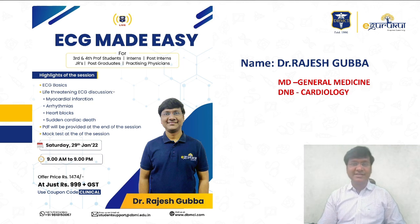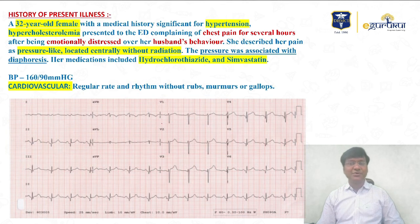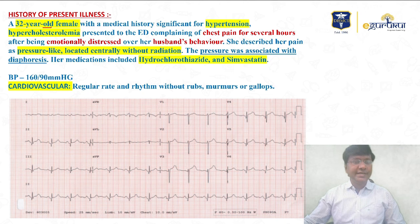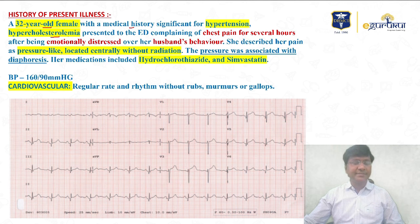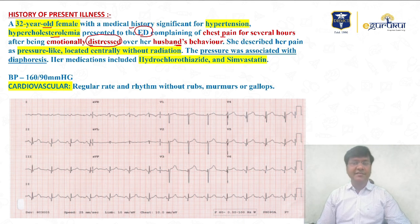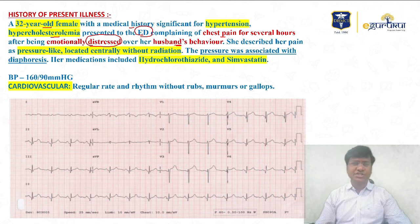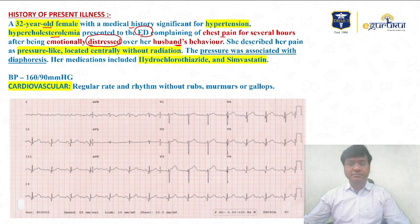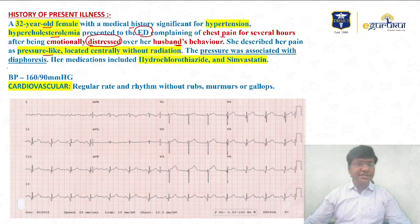This session will help you understand ECG concepts, and a PDF will be provided once the session is finished. Now let me discuss the clinical scenario of today. A 32-year-old female with a significant medical history of hypertension and hypercholesterolemia presented to the emergency department complaining of chest pain for several hours after being emotionally distressed over her husband's behavior — specifically his history of ethanol abuse, arrogant, and dominant behavior.